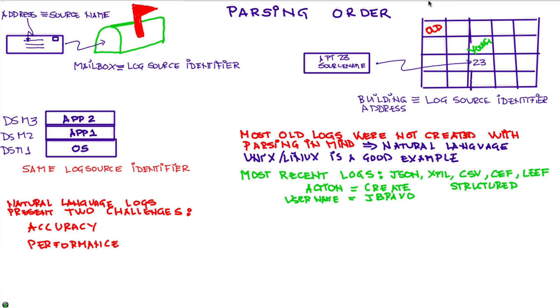Natural language challenges are both accuracy—I need to put this in the right box in real time. And remember these things like curator in real time perform hundreds of thousands of EPSs, events per second.